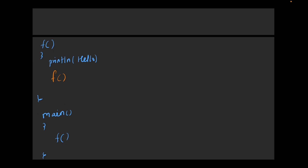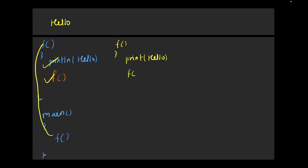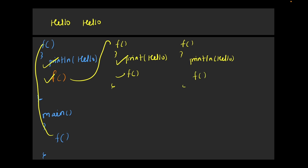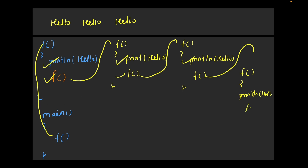First, main will call f, so 'hello' will be printed. Then again the same function will be called, hello will be printed again, and again the function calls itself — hello will be printed, and it calls itself again. In this way, every function will keep on calling itself. There is no condition written for which we want the program to stop, so it will keep on calling and never stop.